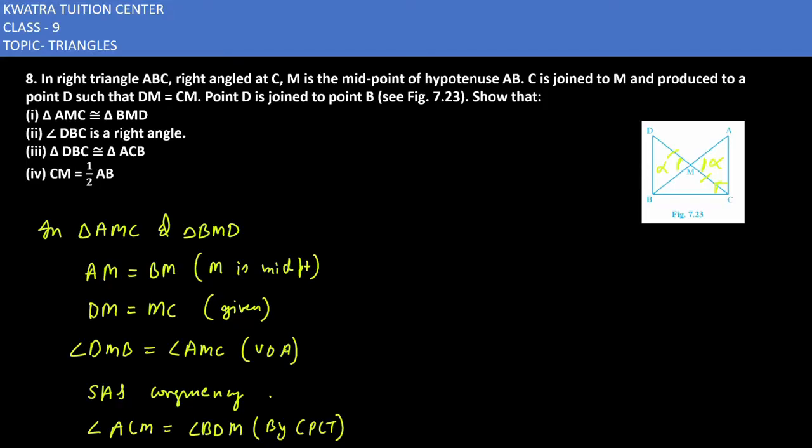Now in the next case, we can prove that triangle DBC is a right angle triangle. So we need to prove this angle is 90 degrees. Now if you look at this angle.